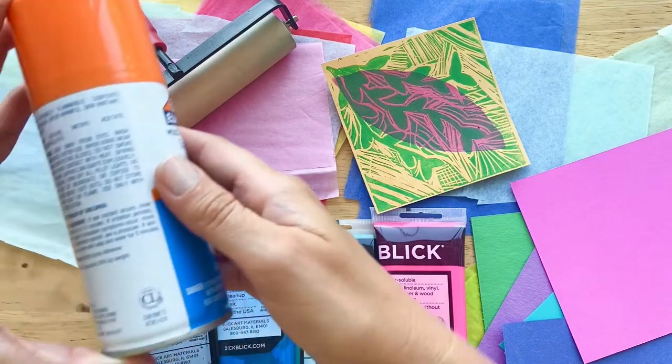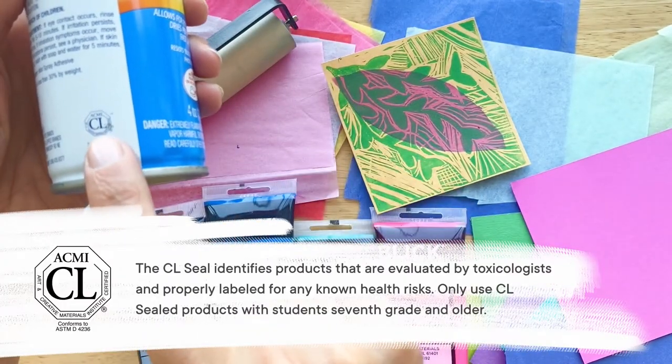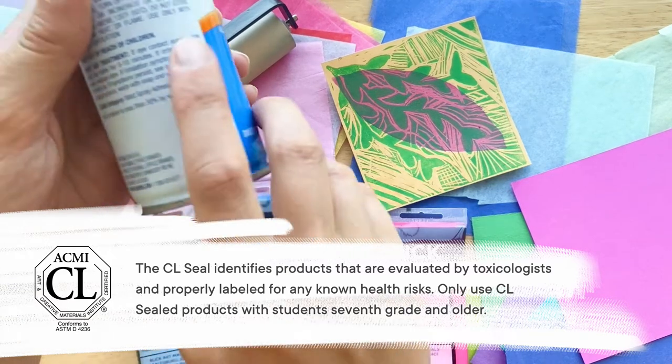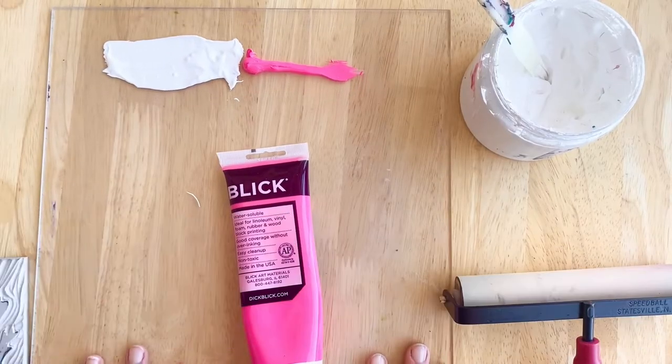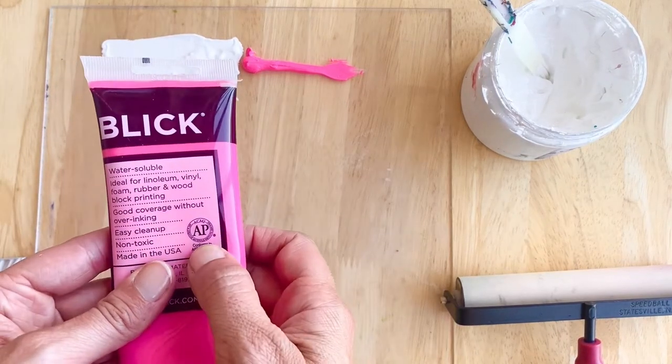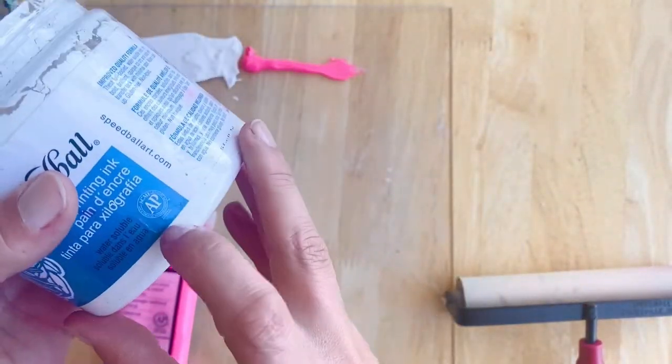The other seal that you might see on art supplies is the CL seal. This stands for cautionary label, which means this product is safe for students 12 and up when used properly. You can trust these seals because ACMI labeled products are tested by board certified toxicologists, which is really good to know when you're buying supplies for students or your own kids.